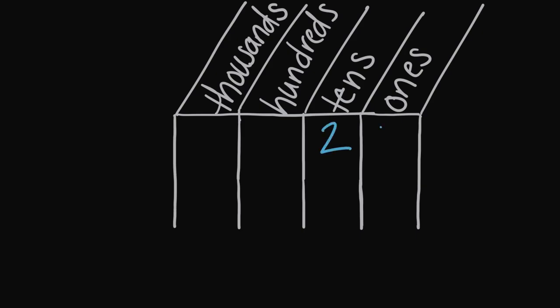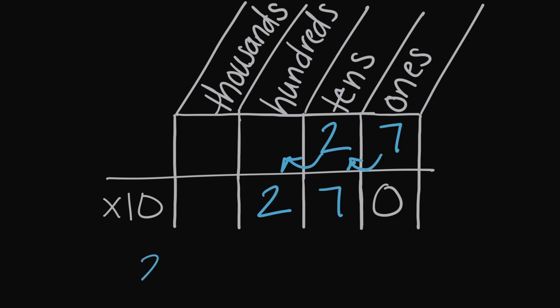Let's say we tried something like 27. If we multiply 27 times 10, well, the 2 is going to move one place value over, so it will now be in the hundreds, and the 7's going to move over a place value, so it will be in the tens, and then we'll have to fill in that empty place value with a zero. So we can say that 27 times 10 is equal to 270.